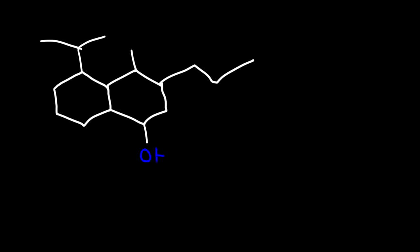Now let's try one final example for practice. Go ahead and determine the number of chiral centers. This one is the second, here's the third, fourth, fifth, sixth, and seventh. I've counted a total of seven chiral centers. This one is not a chiral center because of the two methyl groups, but everything else listed here is a chiral center.